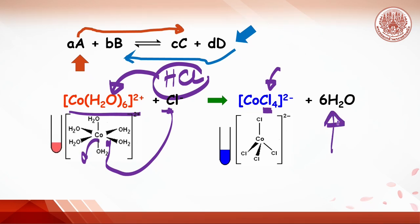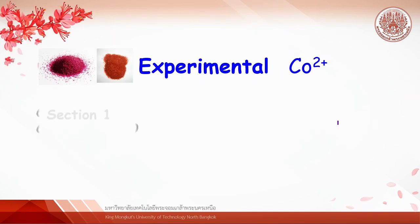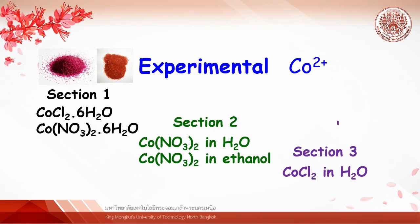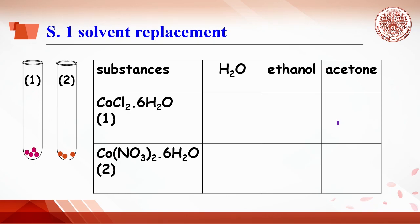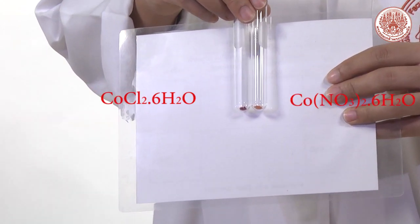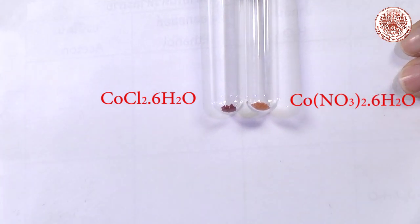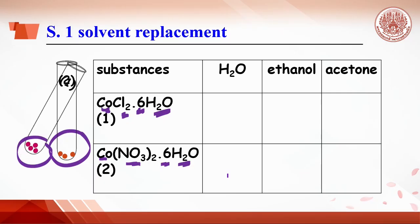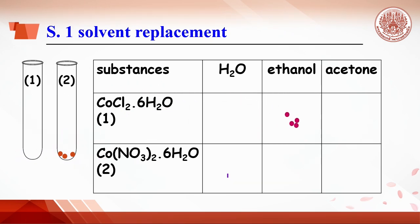There are three sections in this experiment. Today we use many types of cobalt solutions, so please look more carefully before doing the experiment. Section one: observe the crystal of cobalt chloride hexahydrate and cobalt nitrate hexahydrate. Pour the cobalt chloride on the plastic sheet and use stirring rod to separate the crystal into three parts. Do the same for cobalt nitrate hexahydrate.